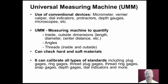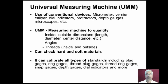In the previous modules, we discussed various metrological instrumentation like micrometer, vernier caliper, dial indicators, protractors, depth gauges, microscope, etc. These instruments are used mostly to check one feature of the workpiece. For example, a micrometer is used to measure the thickness or length of the workpiece, protractors are used to measure the angle between two surfaces, and depth gauges are used to measure the depth of holes.